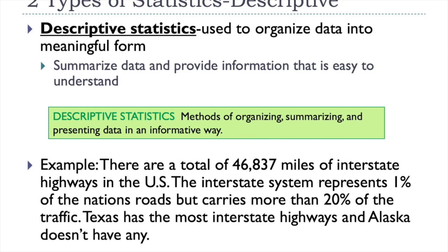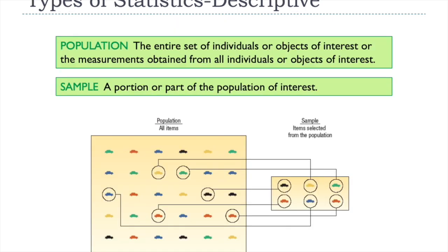And so, and again, another definition here, descriptive statistics. Two important things here on this slide are the difference between a population and a sample. And so population is the entire set of individuals of interest or the measurements that we have obtained. And then a sample is just a portion of the population.